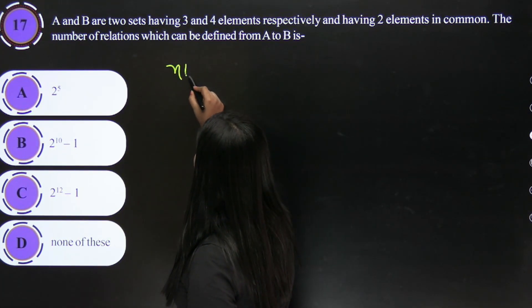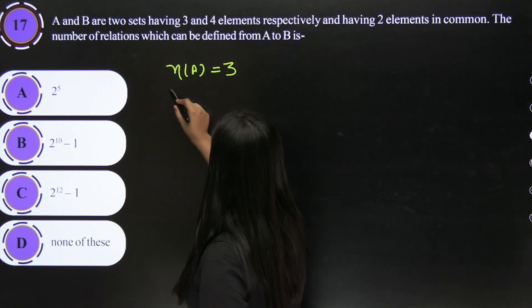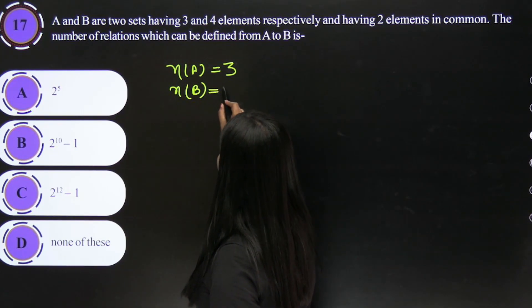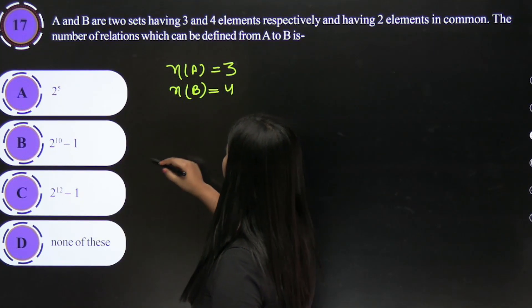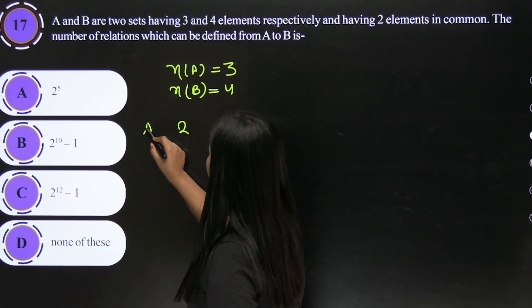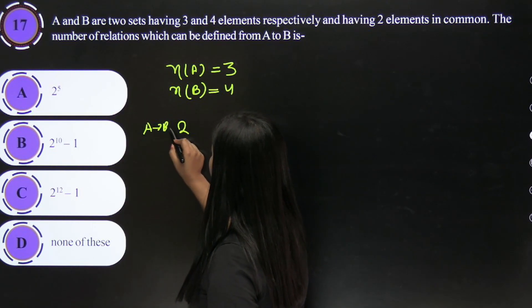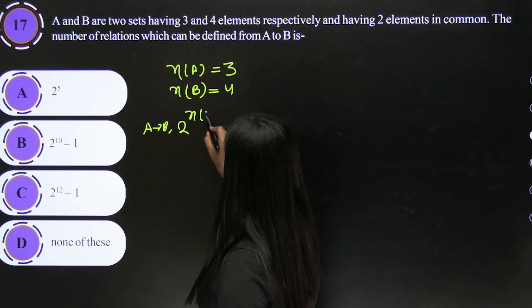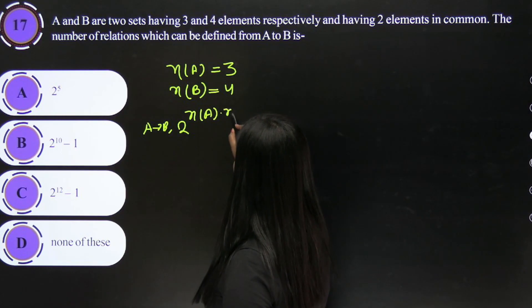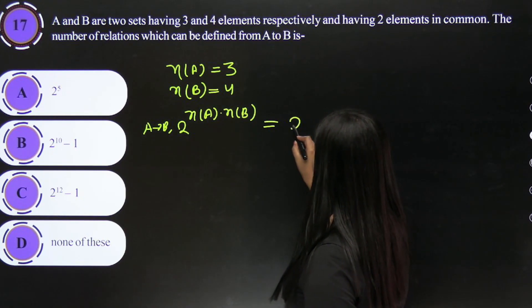This is a simple formula. If A has number of elements as 3 and B has number of elements as 4, then number of relations from A to B will be 2 to the power n(A) times n(B). So here it will be 2 to the power 12.